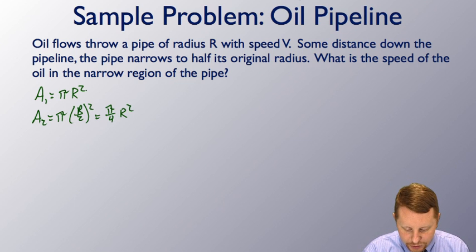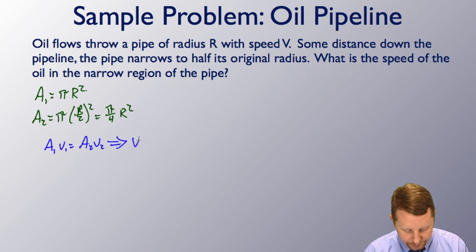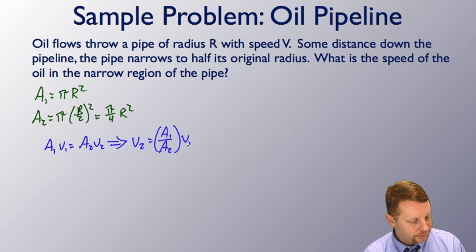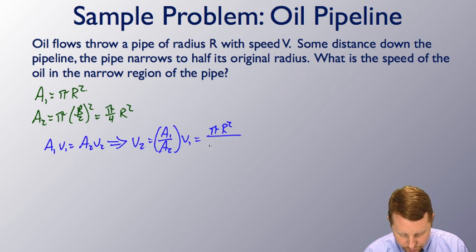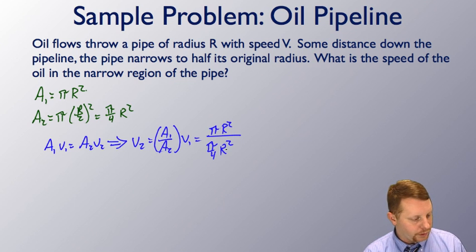Again we'll apply the continuity equation for fluids to say that A1v1 equals A2v2. And solving for v2 again, v2 equals A1 over A2 times v1, or that's going to be πR squared over π over 4 R squared, all times whatever that v1 is.